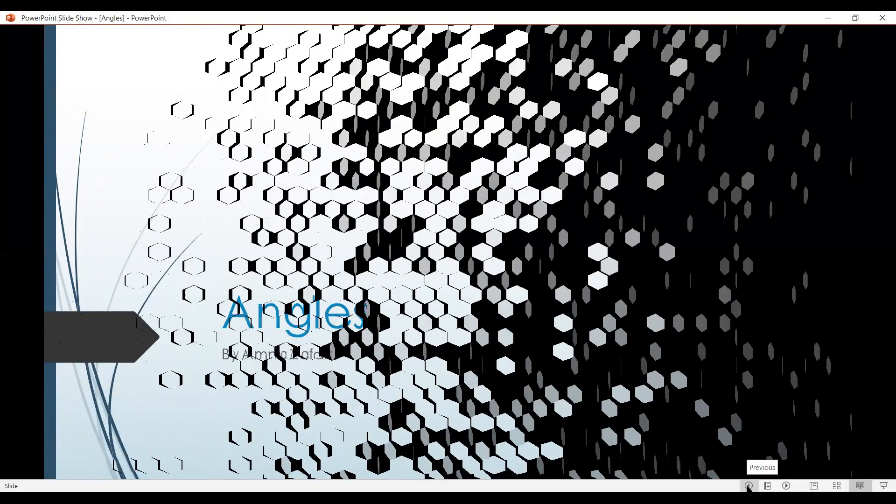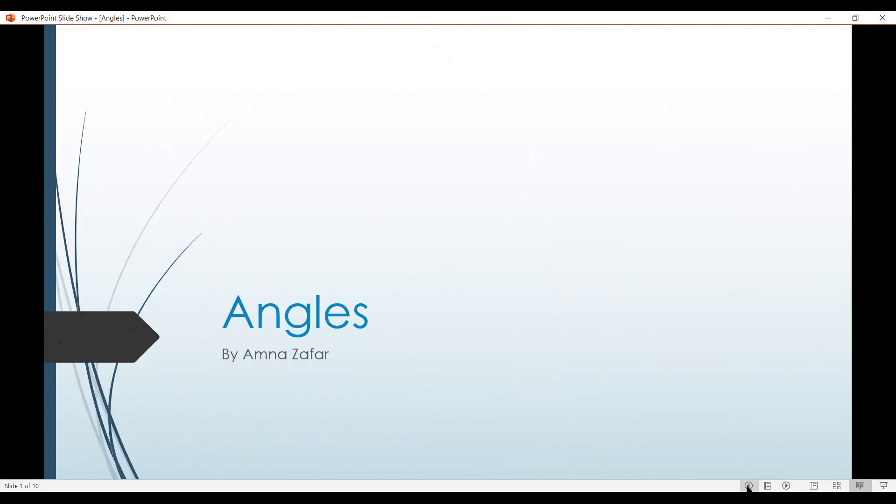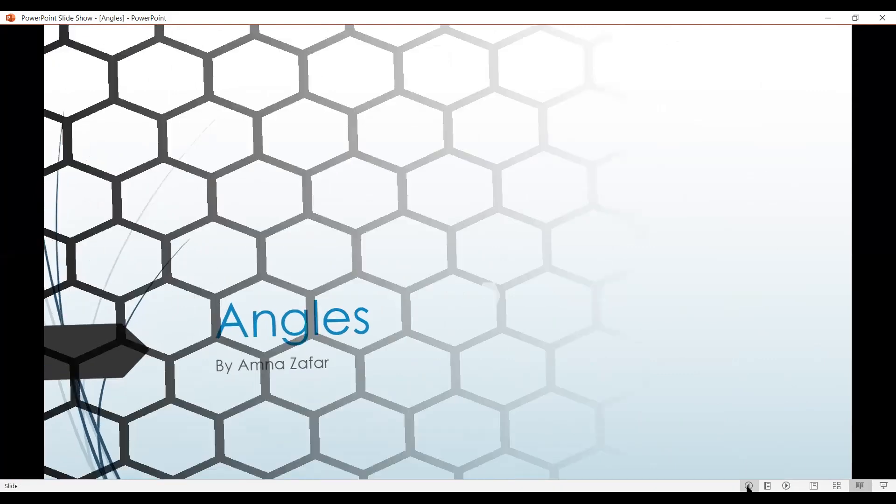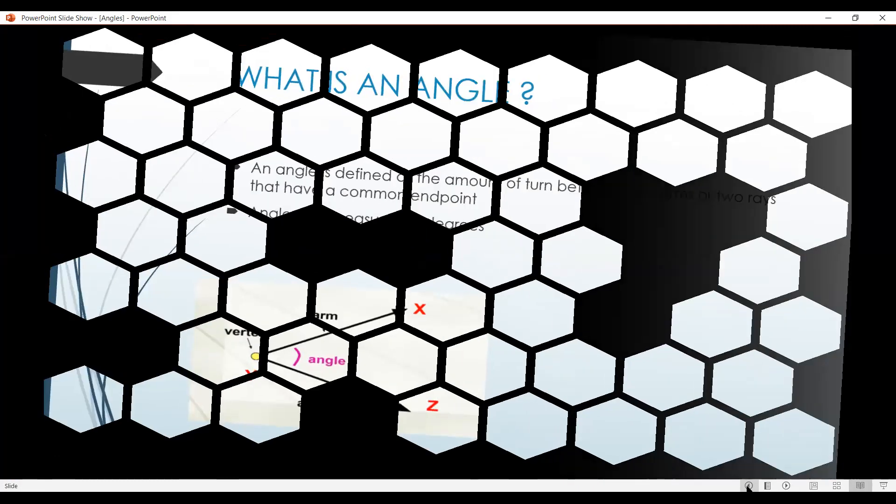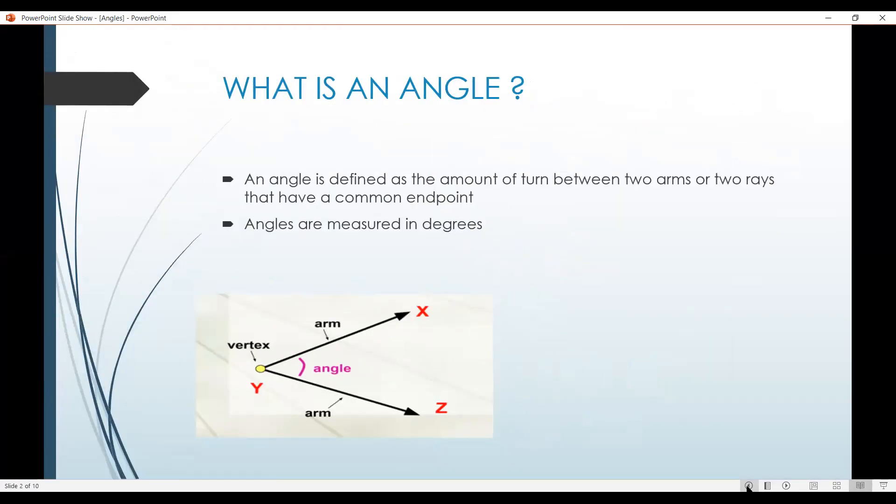Good morning and Assalamualaikum. My name is Amna Saffer and today my topic is Angles. First of all, what is an angle? An angle is defined as the amount of turn between two arms or two legs that have a common end point. Angles are measured in degrees.